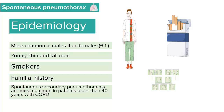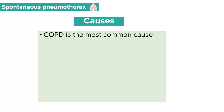Secondary spontaneous pneumothorax is most common in patients who are older than 40 years and who have underlying lung conditions such as chronic obstructive pulmonary disease. COPD is the most common cause of secondary spontaneous pneumothorax.